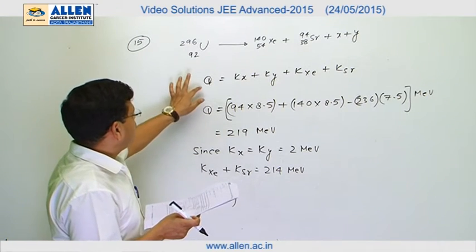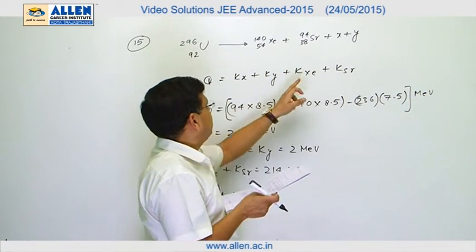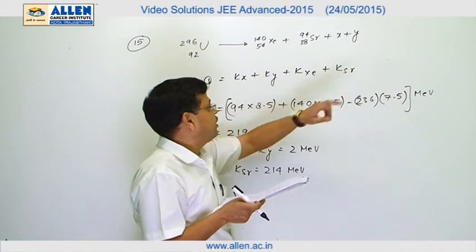Now, if we calculate the Q value of the reaction, we will find Q is equal to kₓ plus kᵧ plus kₓₑ plus kₛᵣ.